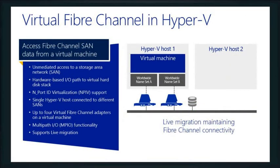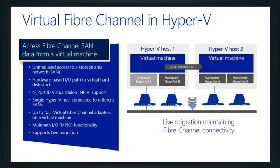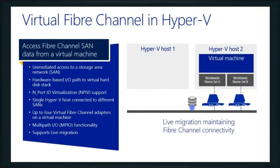Something we put into R2 is virtual fiber channel. Being able to use virtual fiber channel from our host is important, but more importantly, how do I use virtual fiber channel inside of my virtual machine so my virtual guests can actually access it? We support import virtualization ID and up to four virtual machine channel adapters. We have multi-path I/O functionality, and importantly this is supported across live migration.